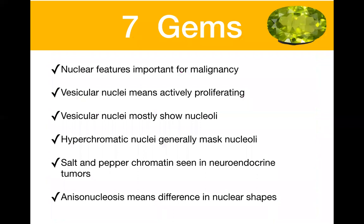The seven key gems for nuclear and cellular details in histopathology: first, nuclear features are important criteria for determining malignancy. Second, vesicular nuclei means the cell is actively dividing, and these cases will also show prominent nucleoli. Third, hypochromatic nuclei generally mask the nucleolus. Fourth, salt and pepper chromatin is seen in neuroendocrine tumors. Fifth, anisonucleosis means the nuclei are of different shapes and sizes. With this, we stop here — thank you very much, and thanks for your patient hearing.